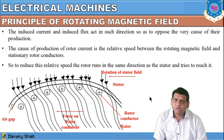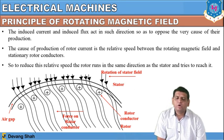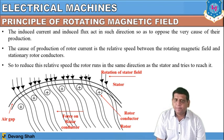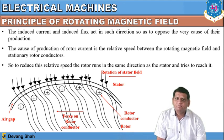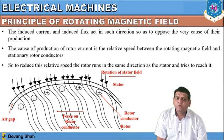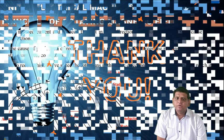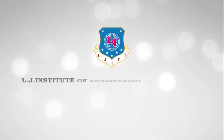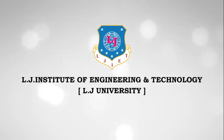The rotor follows the speed of the rotating magnetic field but never actually attains it — because if it did, the relative speed would become zero, the flux would become zero, and there would be no torque. Therefore, in a three-phase induction motor, the synchronous speed Ns is always greater than the rotor speed. Thank you dear students. If you have any difficulty please write in the comment box.